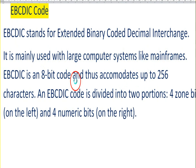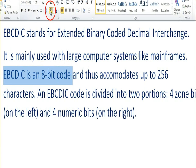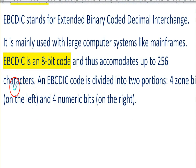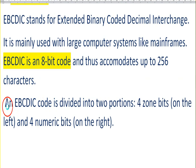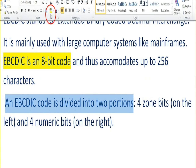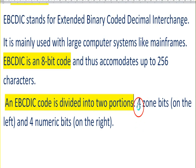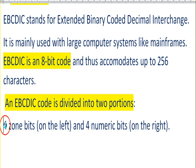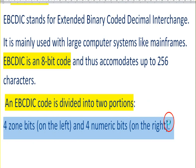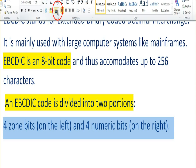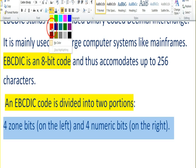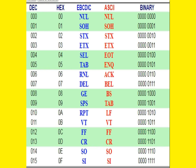Now we're coming to EBCDIC code. EBCDIC stands for Extended Binary Coded Decimal Interchange Code. It's an 8-bit code and accommodates up to 256 characters, divided into two partitions. Here is an example.